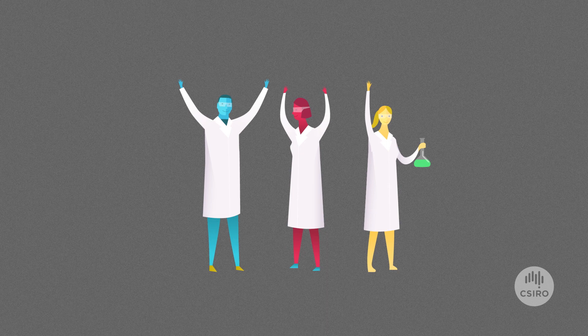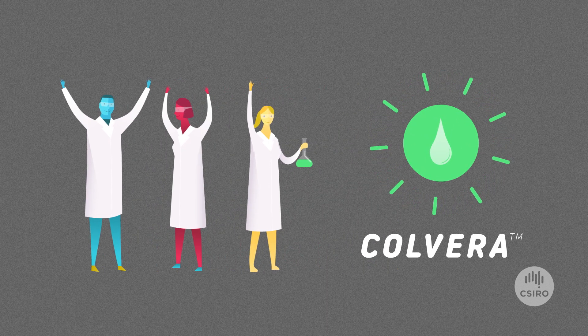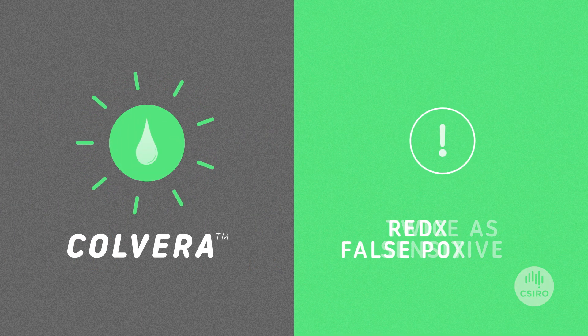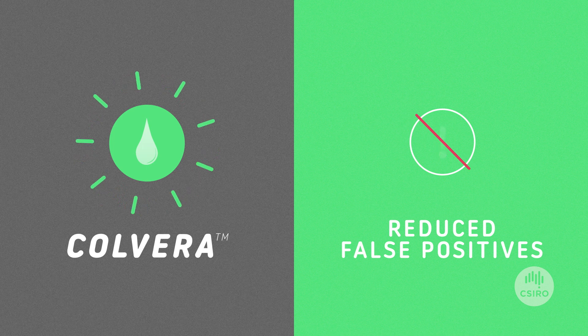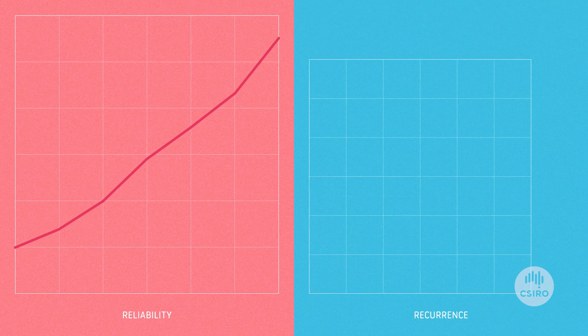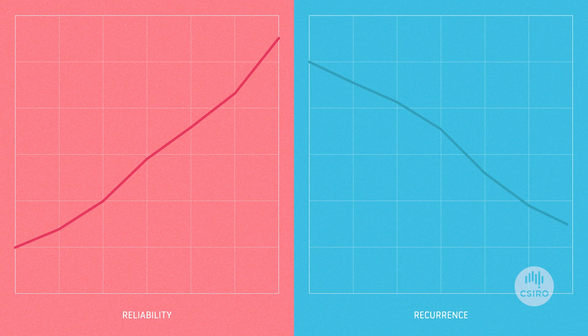With that knowledge, they and their collaborators were able to develop and trial a new blood test called Colvera. It's twice as sensitive as the existing test and doesn't deliver false positives based on factors like smoking. This far more reliable test vastly increases the ability for survivors to stop bowel cancer recurrence in its tracks.